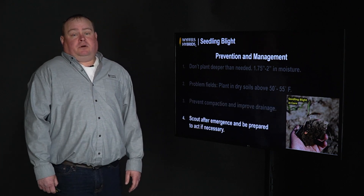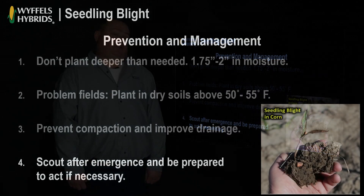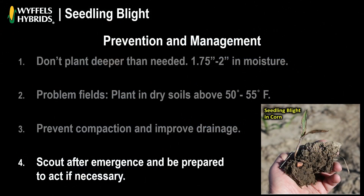Another thing you want to do is scout after emergence. When you get about 110 to 120 heat units, you want to be out walking your cornfield looking for those plants coming out of the ground. If you have a heavy crust, it might be a good idea to get out a rotary hoe if there's no rain in the forecast. You could also do a very light irrigation if you're capable of doing that, to help the corn pop up out of the ground.